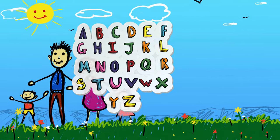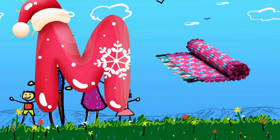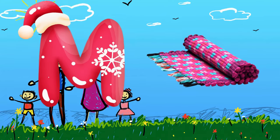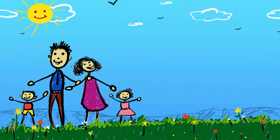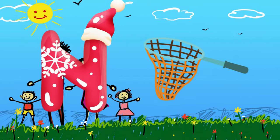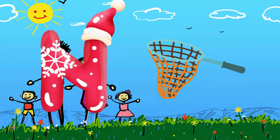M is for mat, m-m-mat. N is for net, n-n-net.